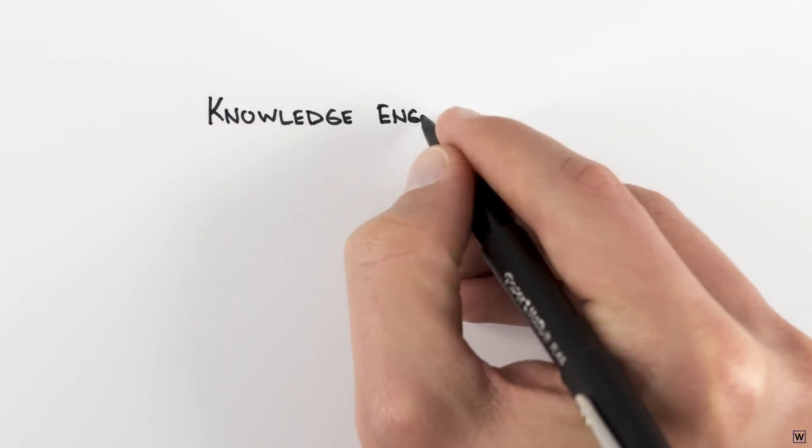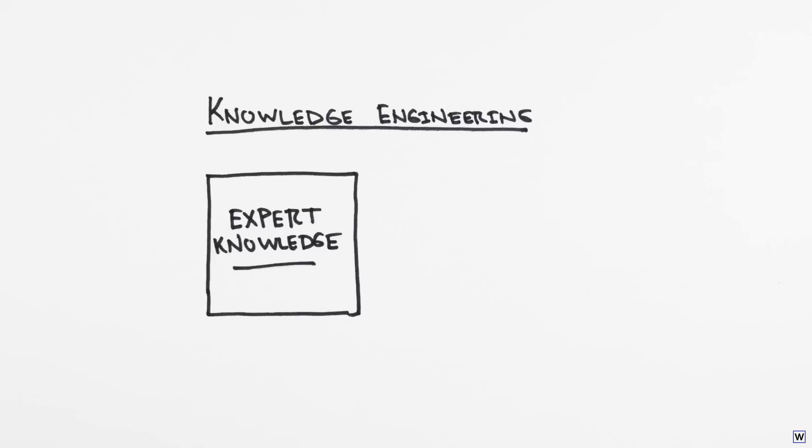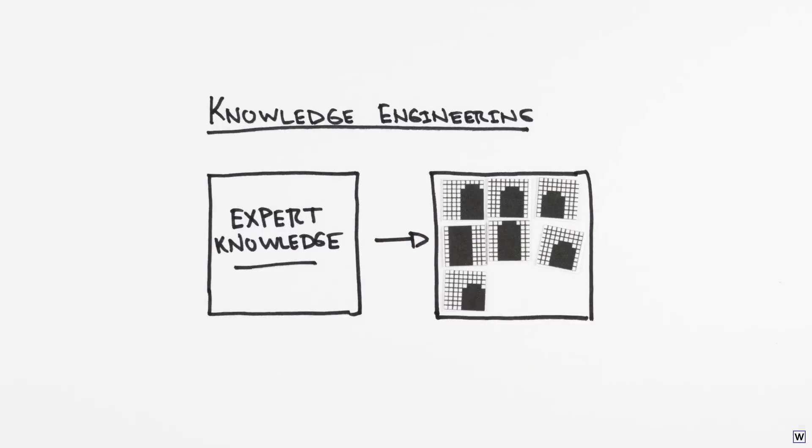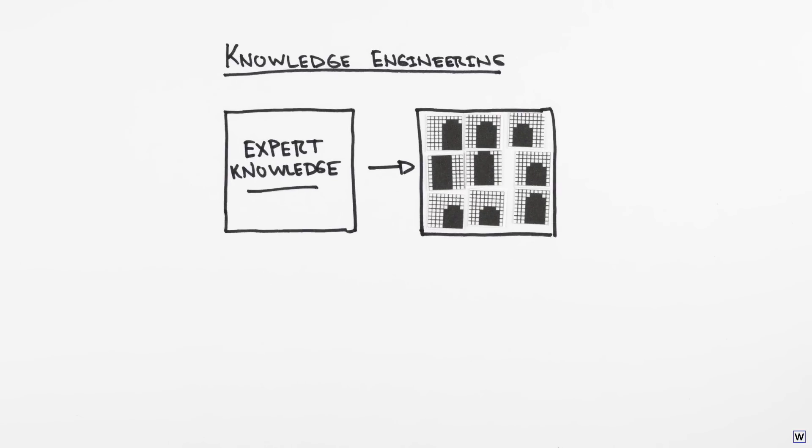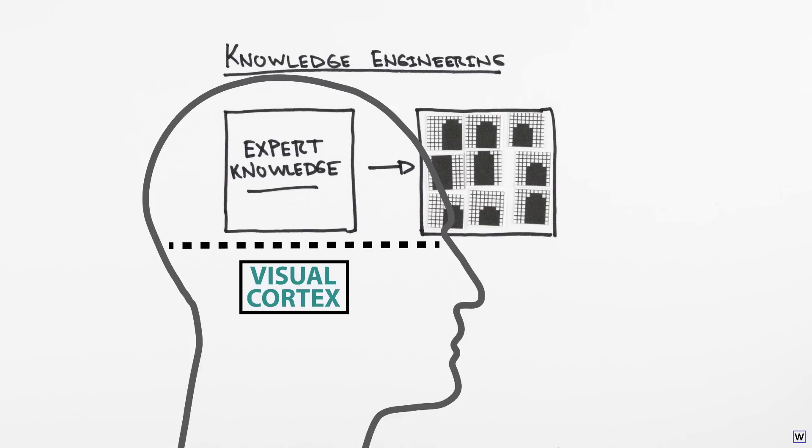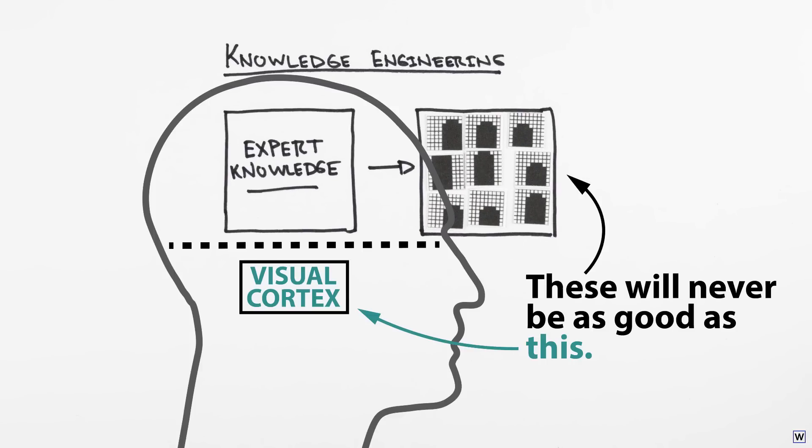What this means for our problem is that no matter how much time we spend writing code that describes what we think fingers look like, our code will never be as good at recognizing fingers as our visual cortex is. Simply turning knowledge into code, knowledge engineering, assumes that we know what's going on between our ears, and we simply don't when it comes to many of the problems we solve on a day-to-day basis.